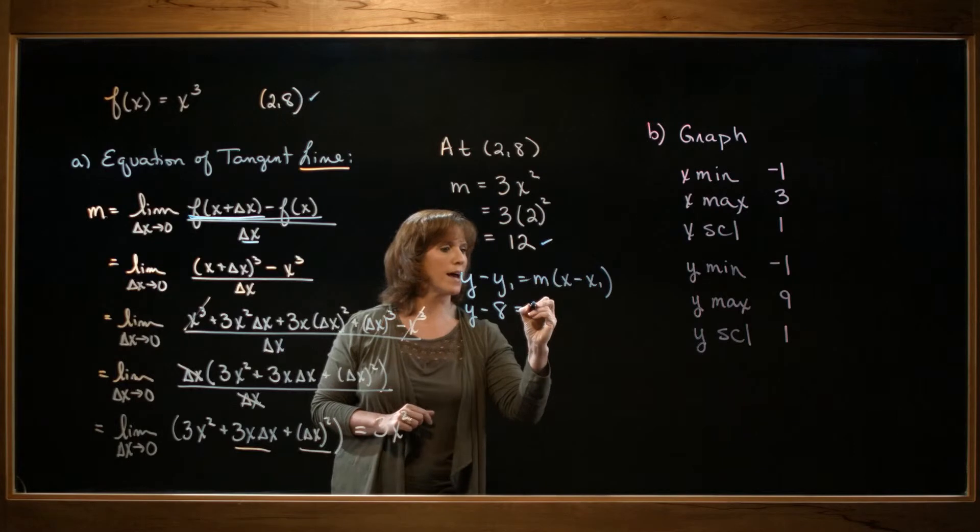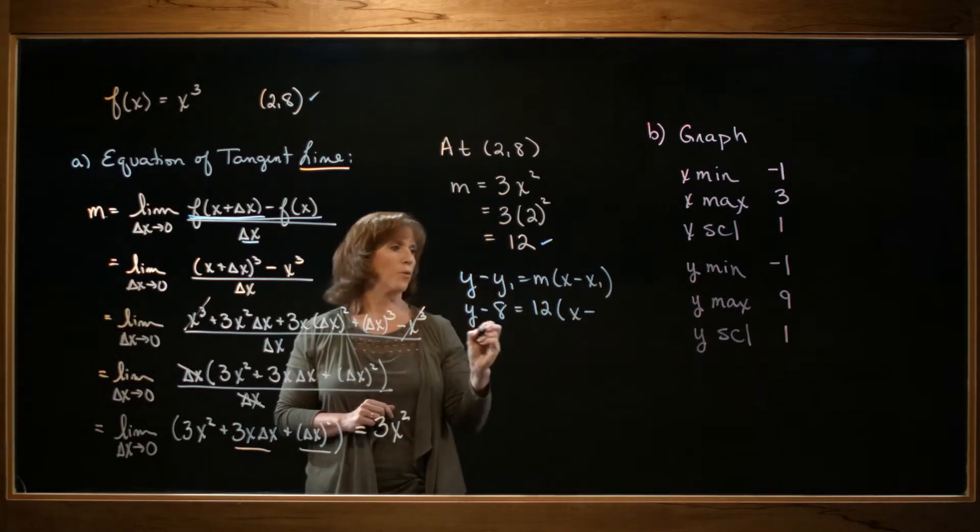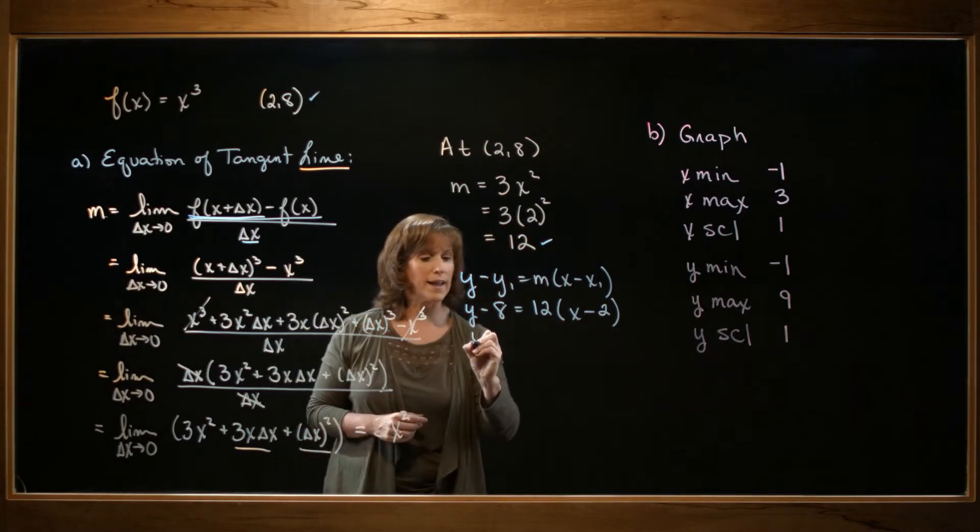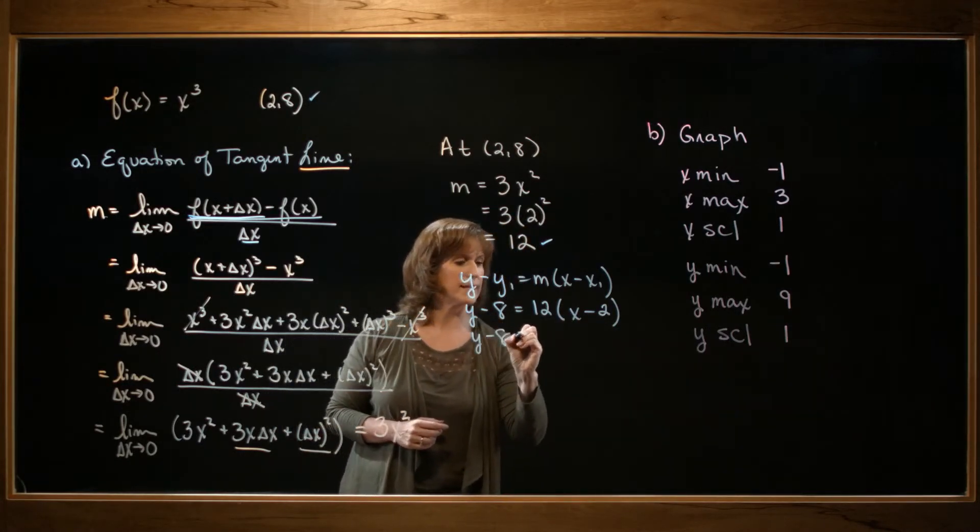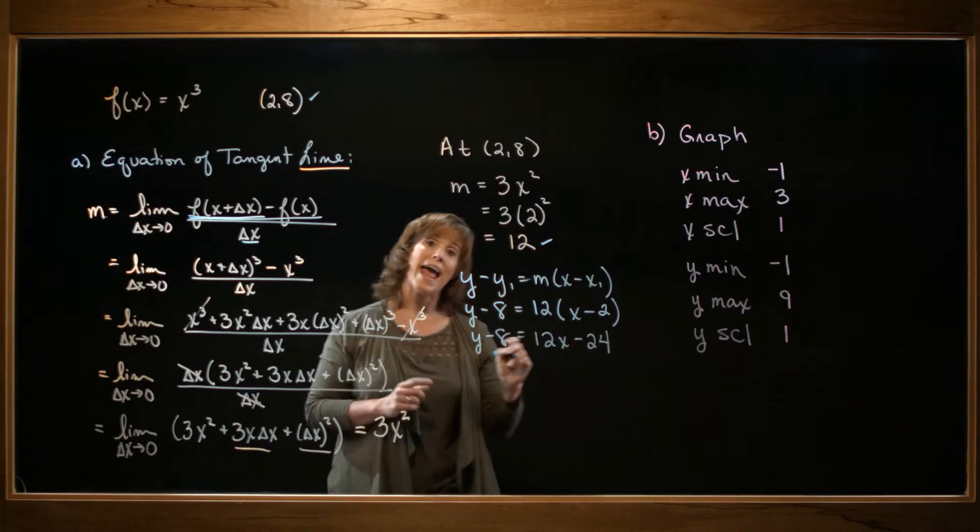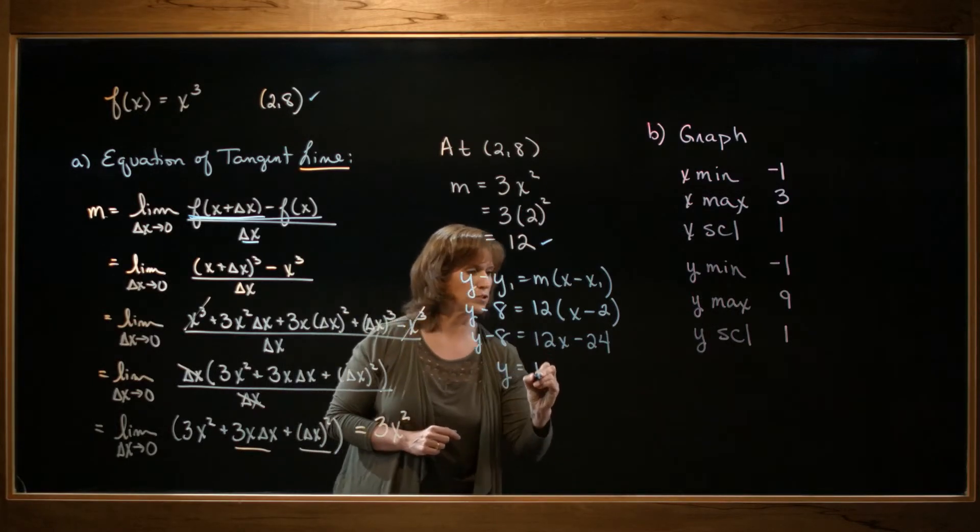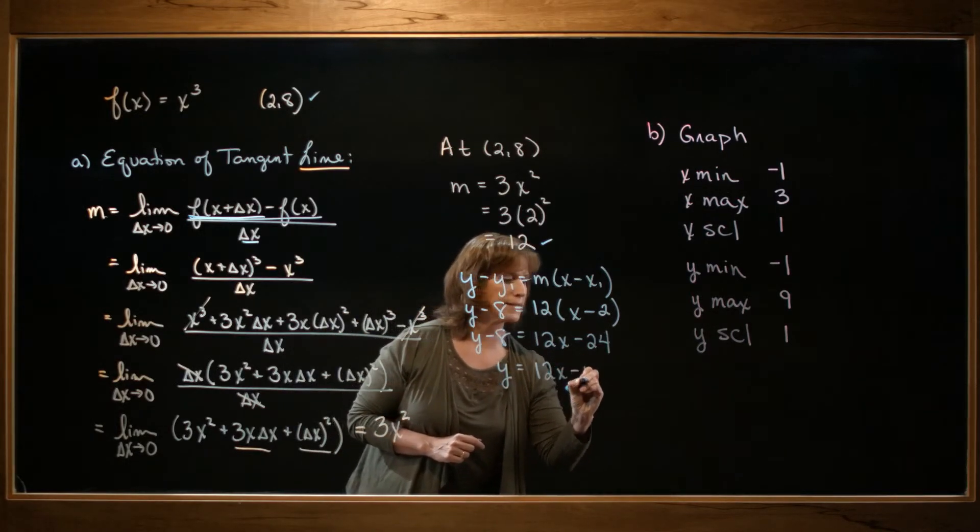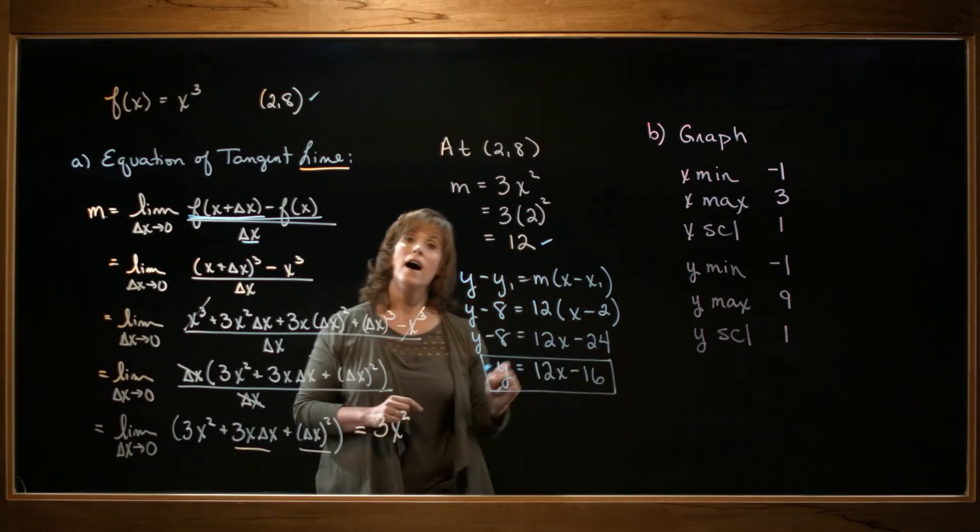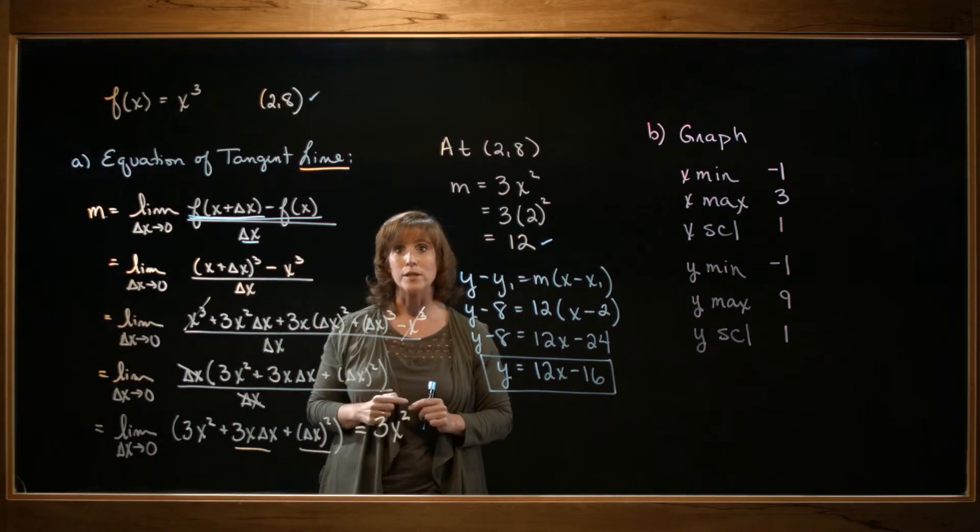The slope of my tangent line, that's the 12. And the x coordinate of my given point is 2. With a little simplifying, I have y minus 8 equals 12x minus 24. And I'm going to solve for y. So I'm going to add 8 to both sides. And I'm left with y equals 12x minus 16. And that's the equation of the tangent line to the curve x cubed passing through the point 2, 8.